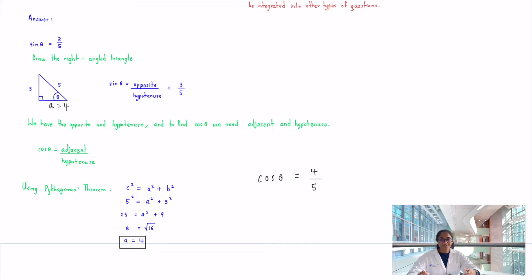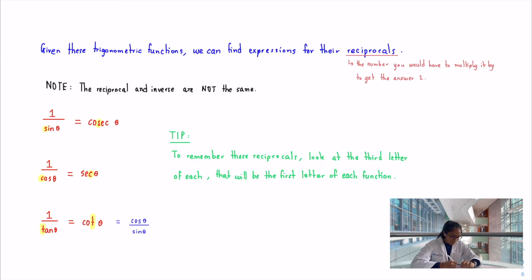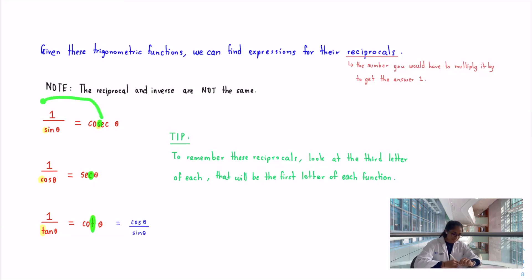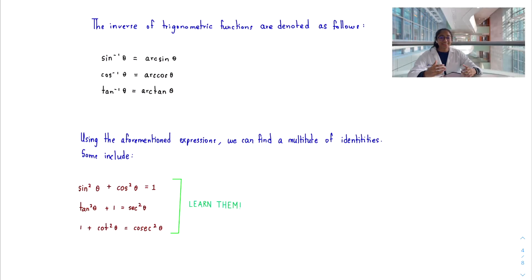Given these trigonometric functions, we can find their reciprocals: 1 over sin θ equals cosec θ, 1 over cos θ equals sec θ, and 1 over tan θ equals cot θ. A useful memory trick: look at the third letter of cosec, sec, and cot — they match the third letter of their respective original functions (s, c, t). Also remember that 1 over tan θ equals cos θ over sin θ.